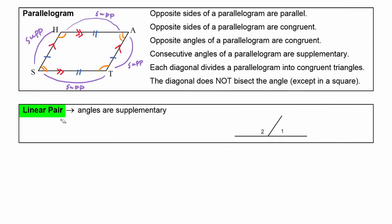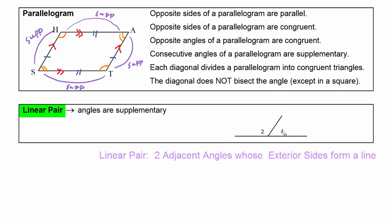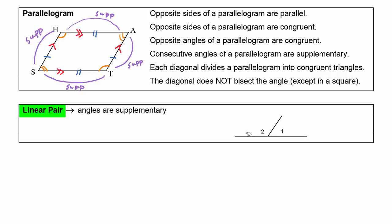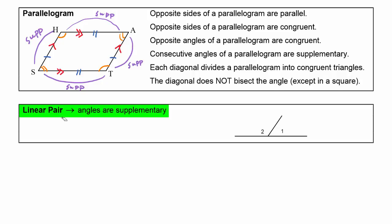A linear pair of angles occurs when you have two adjacent angles whose exterior sides form a line. When that happens, we know that a straight angle has a measure of 180 degrees, so the two angles have to add up to 180, making them supplementary. In this picture, angle one plus angle two equals 180 degrees.